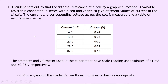Question 1 says that a student sets out to find the internal resistance of a cell by a graphical method. A variable resistor is connected in series with a cell and varied to give different values of current in the circuit. The current and corresponding voltage across the cell is measured and a table of results given below. We've got two sets of readings — current in milliamps and voltage in volts — with 5 sets of readings for both. The ammeter and voltmeter used in the experiment have scale reading uncertainties of plus or minus 1 milliamp and plus or minus 0.02 volts respectively.